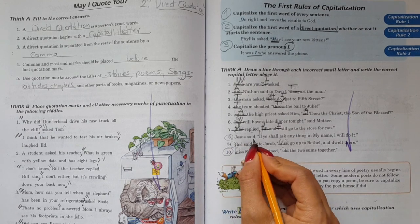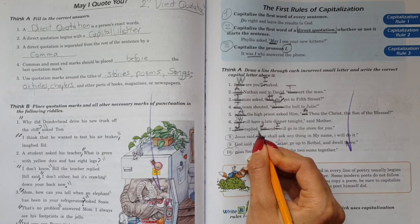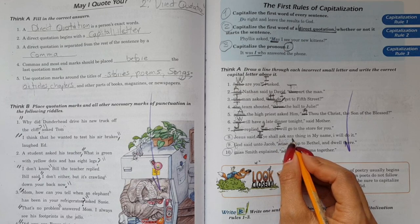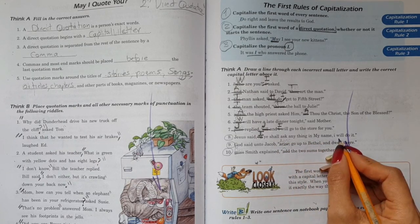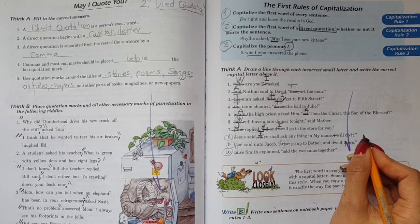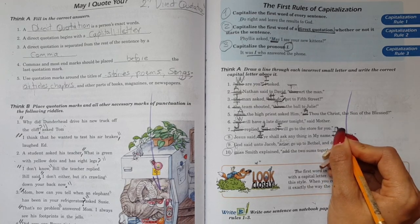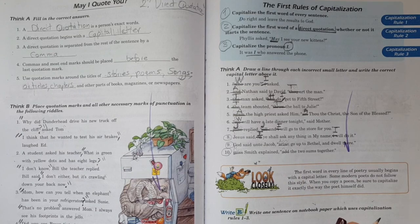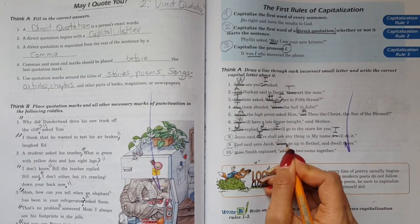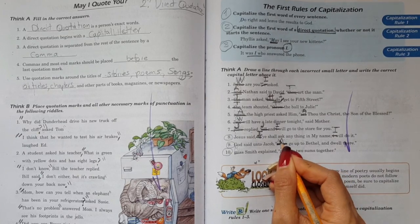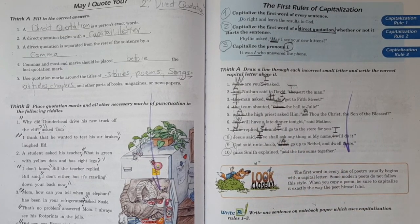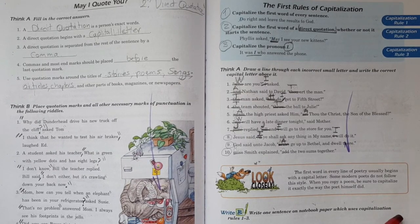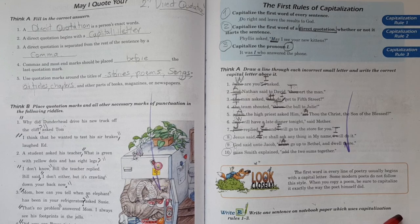So now let's move on. Number eight should be, Jesus said if - so I'm going to cross it out and write the I. If ye shall ask anything in my name, I will do it. Cross it, letter I, and put it as a capital letter. Number nine. God said unto Jacob, arise - so cross, arise, and put a capital A. Arise, go up to Bethel and dwell there. Very good.